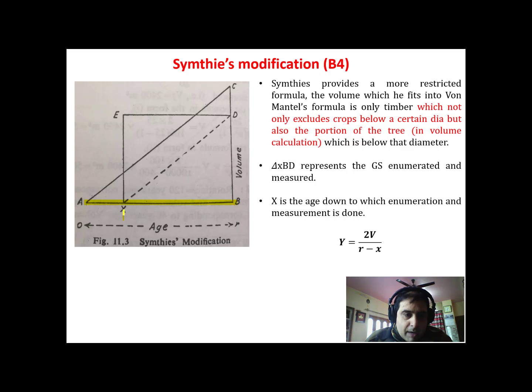He told us that up to this diameter x we will enumerate the growing stock only up to x, because these are much smaller diameter trees and don't have much significant contribution in the volume.